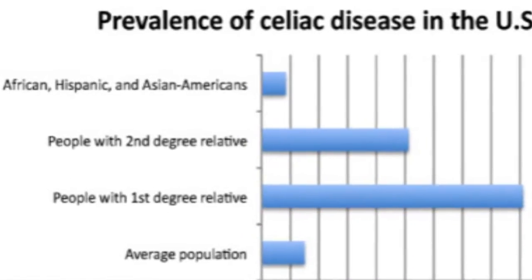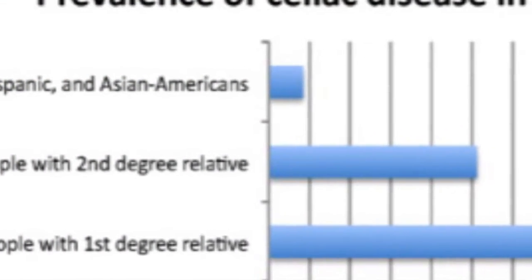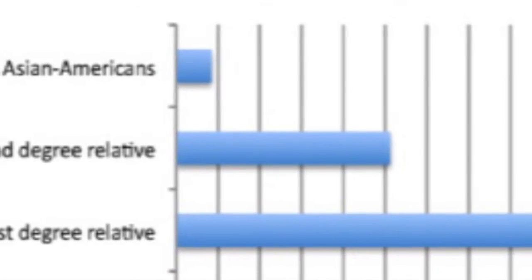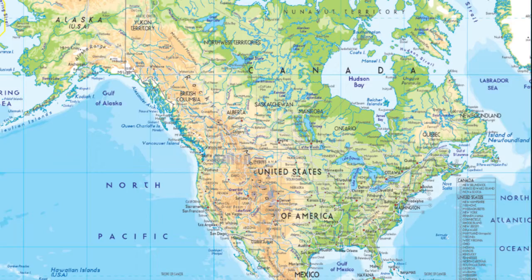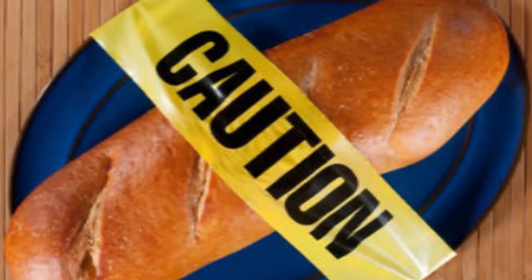Celiac disease is most frequent in people of northern European descent. Collectively, about 0.4% of African, Hispanic, and Asian Americans have the disease throughout the United States. 2.5% of people with a second-degree relative and 4.5% of people with a first-degree relative who have the disease also have the disease as well. So if you have a family history of the condition, you will have a higher risk factor for celiac disease. Since the main gene pool of people with this condition originated in northern Europe, all of their descendants throughout North America, Australia, and South Africa are all at risk to inherit this disease. People with type 1 diabetes are also at a higher risk of developing celiac disease, and the disease affects about 5 to 10% of people with type 1 diabetes.